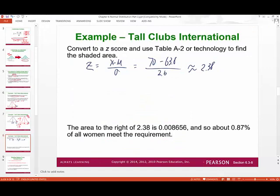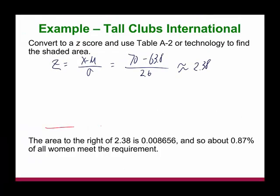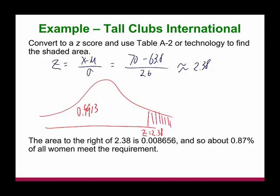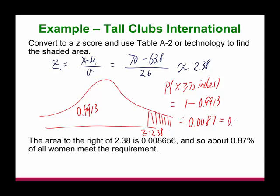Since we know the area to the left-hand side is equal to 0.9913, we can use that to find the area to the right, which is what we're looking for. The left area is 0.9913. However, we're looking for the area to the right. Total probability is 1 minus area to the left. So the probability that height is greater than or equal to 70 inches equals 1 minus 0.9913, which turns out to be 0.0087. The resulting probability is 0.87%.